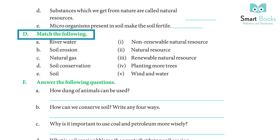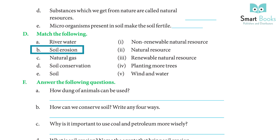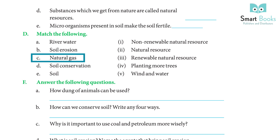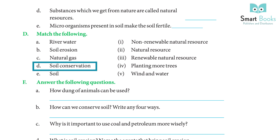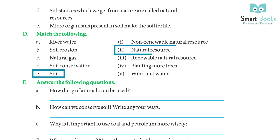Match the following. a. River water — renewable natural resource. b. Soil erosion — wind and water. c. Natural gas — non-renewable natural resource. d. Soil conservation — planting more trees. e. Answer: natural resource.